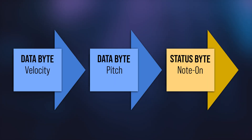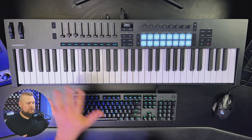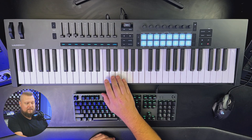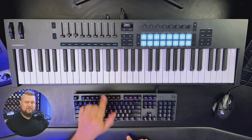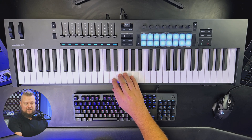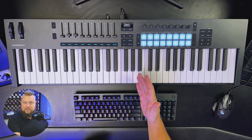To keep commands separate from musical values, MIDI assigns different ranges. Status bytes always use a value range of 128 to 255, whereas data bytes always use a value range of zero to 127. This means each data byte can have 128 possible combinations. MIDI pitch is represented by a value from zero to 127 — lower notes are going to be closer to zero, and higher notes are going to be closer to 127. For example, middle C is note number 60. If I go up one half step to C sharp, that's 61. If I go up one more half step to D, that's 62. And if I go backwards from C down to B, that's note number 59.